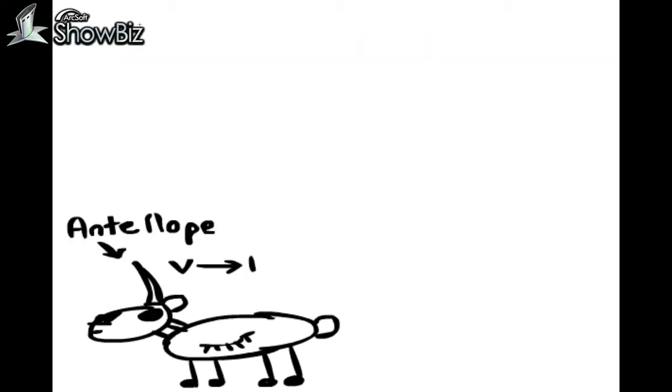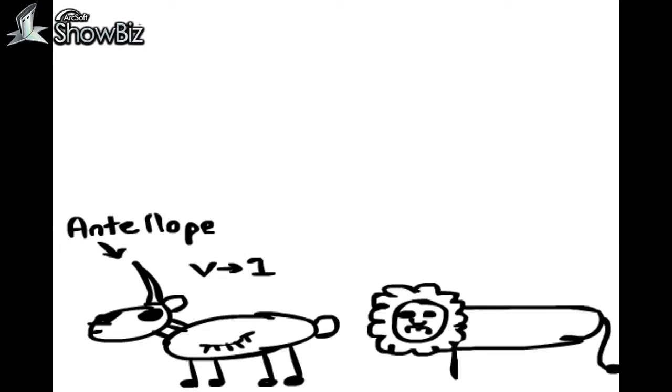A bit like asking why don't antelopes evolve to run faster so that they can outrun the tigers and lions that chase them and want to eat them. The answer is that they did. And then the lions and tigers evolved to run faster.